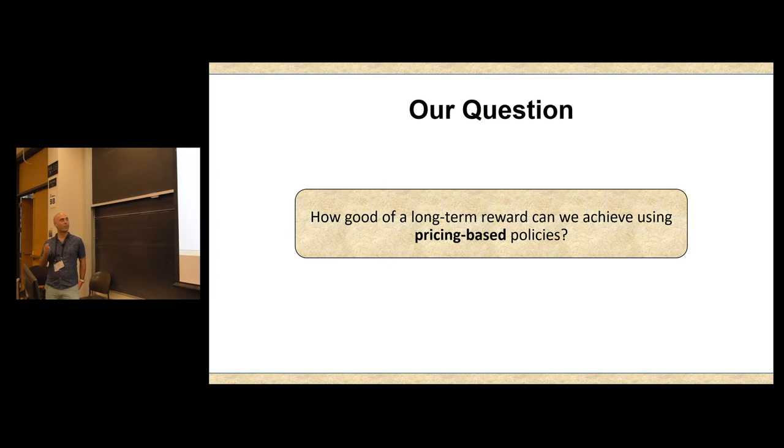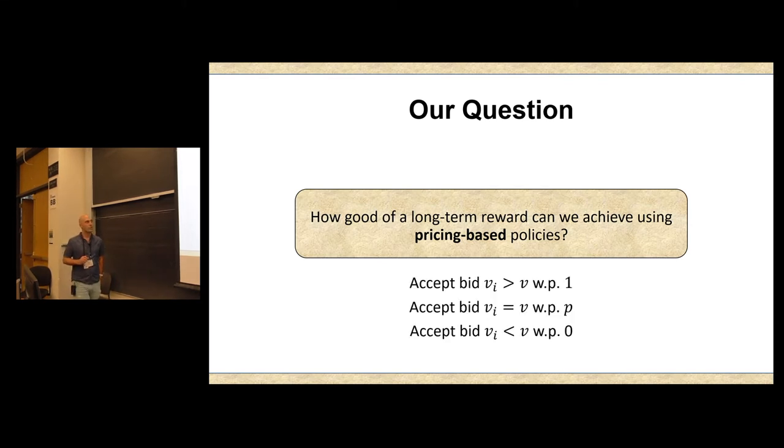So our question here is how well can we approximate the prophet, again, using pricing-based policies? And now, unlike the classic prophet inequality setting, we're going to have a slight variant on this notion of pricing-based. So here, we're going to have a tuple of value and probability. Anything above this value, we accept. Anything below this value, we turn down. And anything that has value exactly v, we're going to accept with probability p.